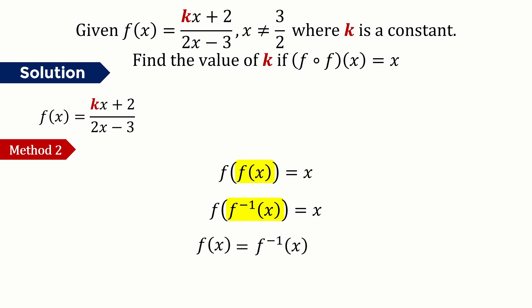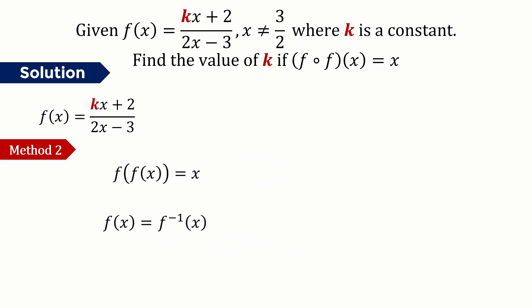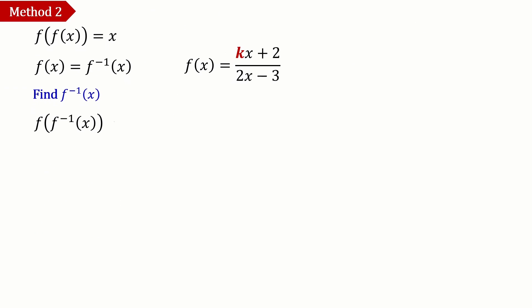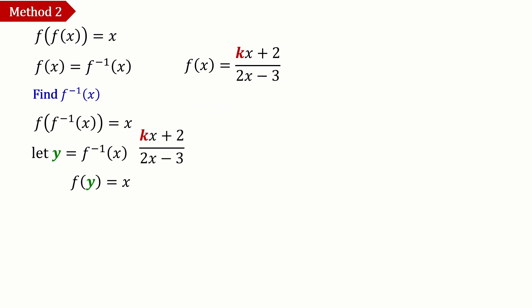We can use that information to find k by going through the process of finding the inverse of f. We know f(f⁻¹(x)) = x, so let y = f⁻¹(x), which means f(y) = x. Substituting x with y in f: (ky + 2)/(2y − 3) = x.